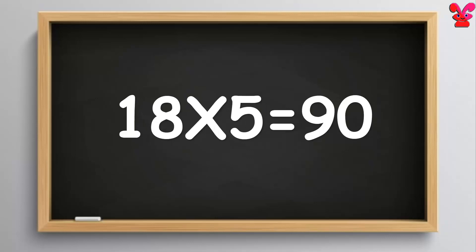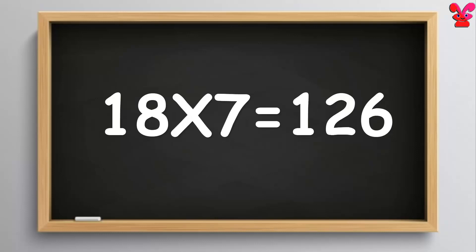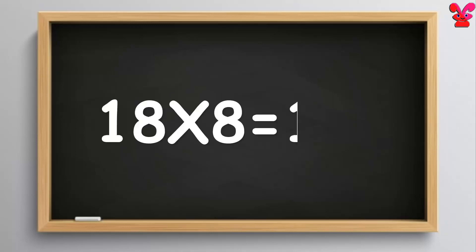18 fives are 90. 18 sixes are 108. 18 sixes are 108. 18 sevens are 126. 18 sevens are 126. 18 eights are 144. 18 eights are 144.